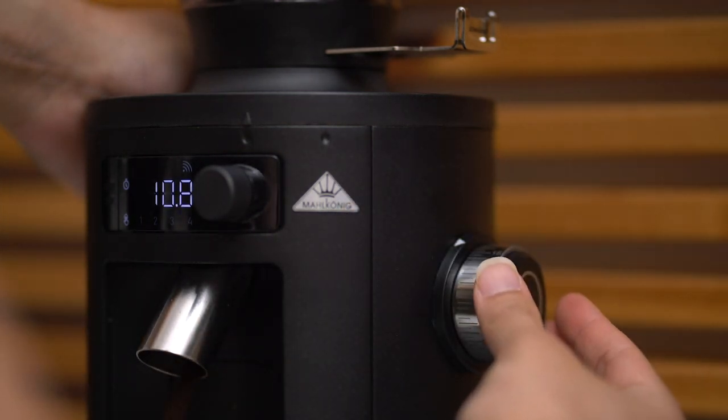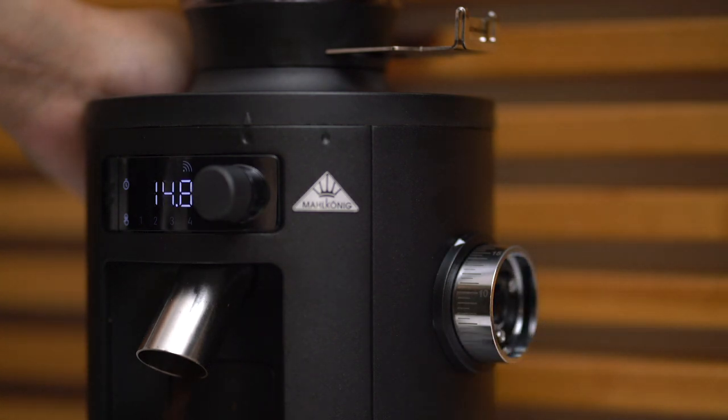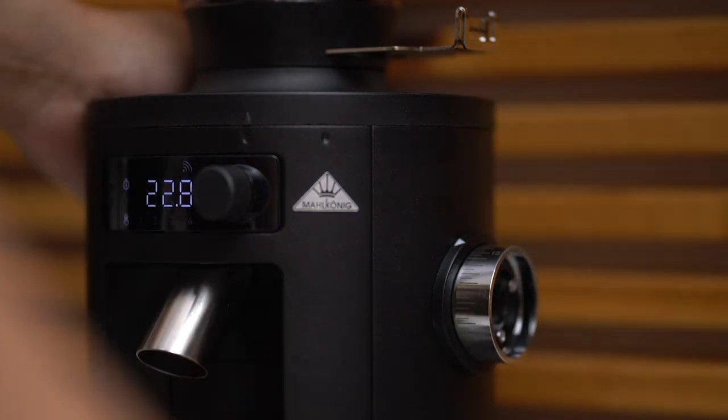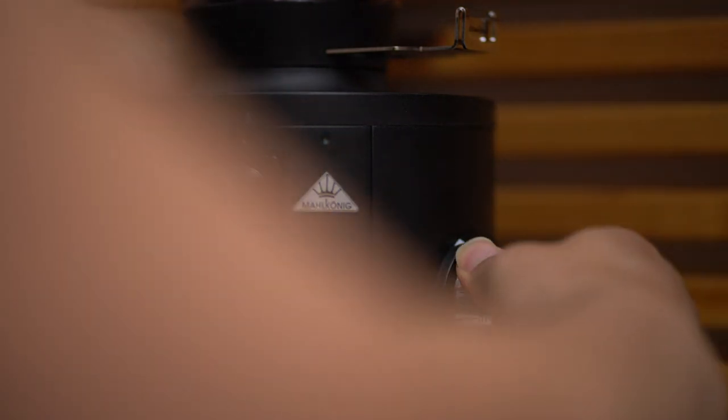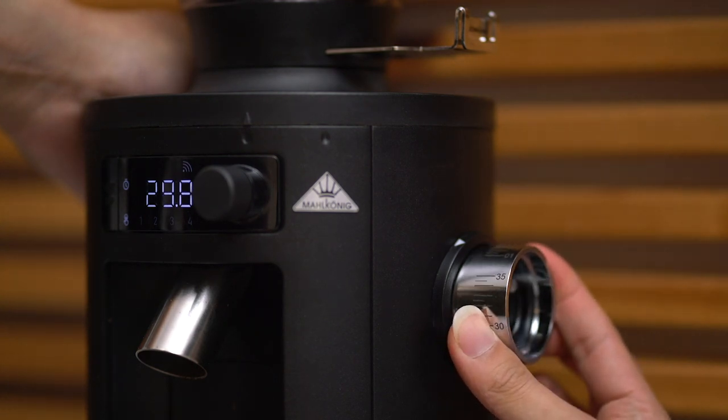There is a little spring ring that can also be removed. Now I turn the knob all the way down to the finest setting. Once I hit it I pull the whole knob out.